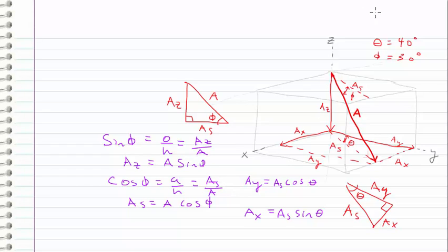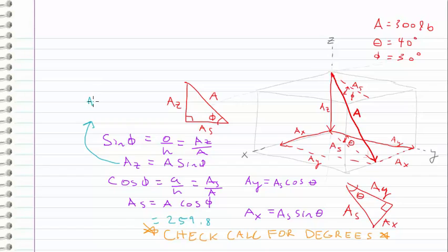We're given A equals 300 pounds. So now we can just plug in the values and find that AS equals 259.8. And anytime you're working with trig functions, make sure that your calculator is in the right mode, in this case degrees. AZ comes out to 150, AY equals 199, and AX equals 167.